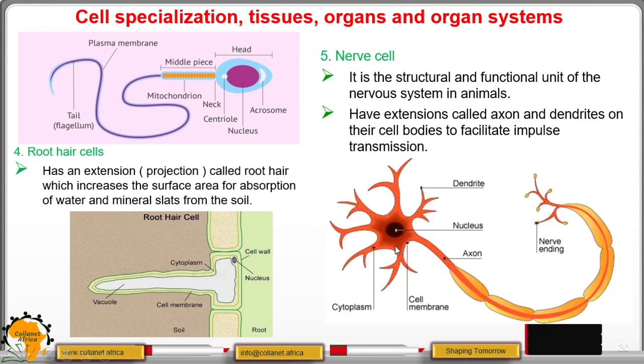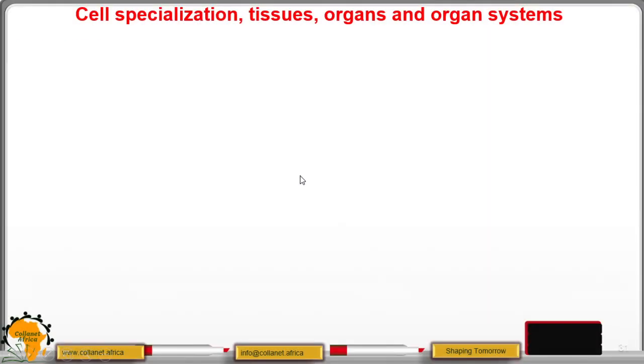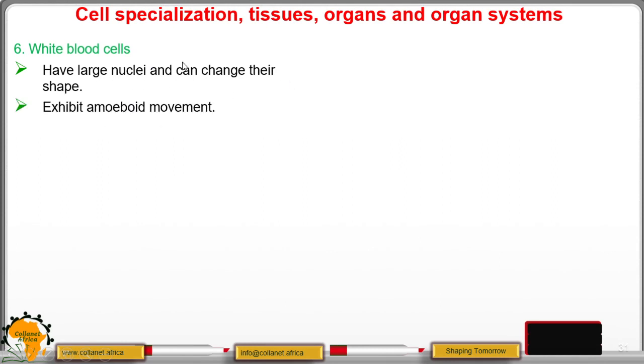This is the nerve cell. The dendrites and the axon. So when there is a wound, the white blood cells change their shape and surround that point to fight the pathogens that are likely to cause the disease.